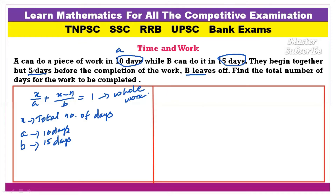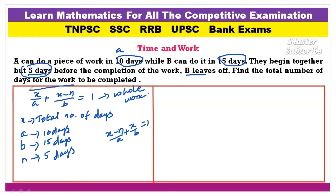So n is equal to 5 days, which is why we use x minus n. Now we are going to substitute into the formula for the total number of days. Once again, the formula is: x divided by A, plus x minus n divided by B, is equal to 1.